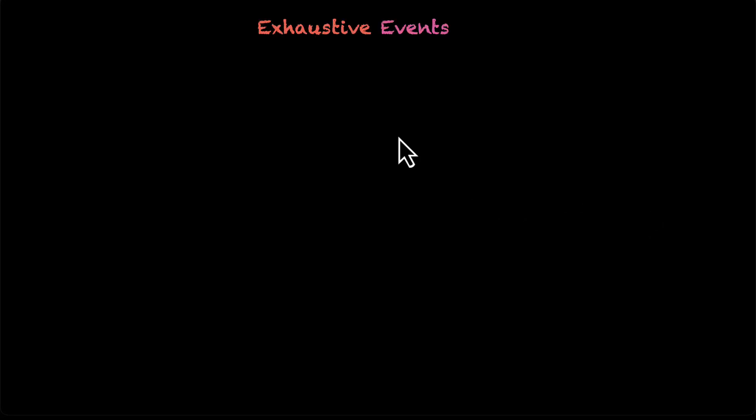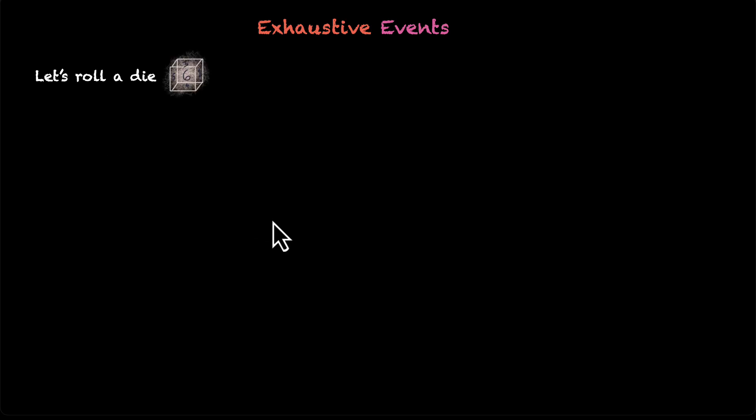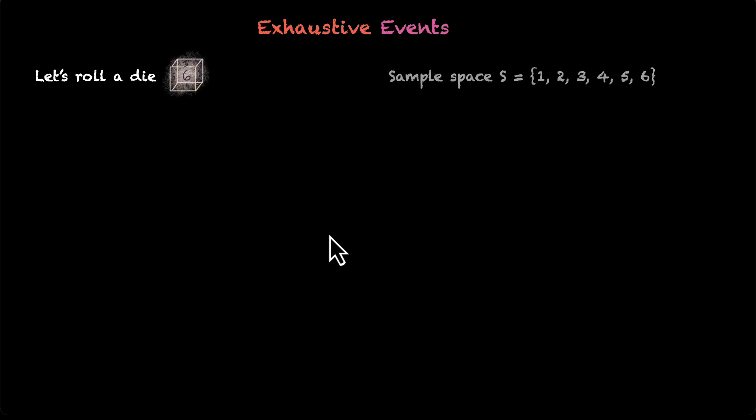In this video, we are going to cover exhaustive events. Let's do this with an example. Let's roll a die, and this is our sample space: 1, 2, 3, 4, 5, and 6.